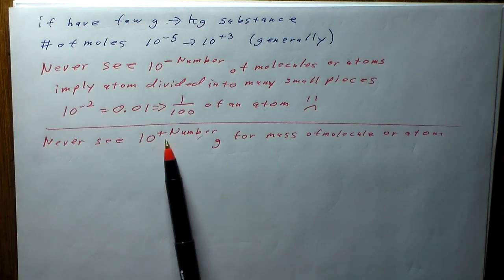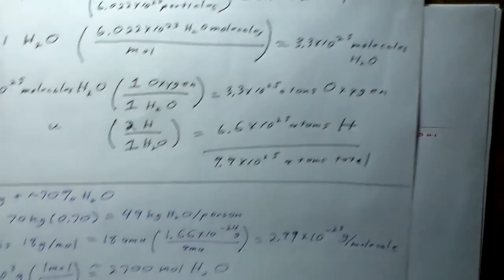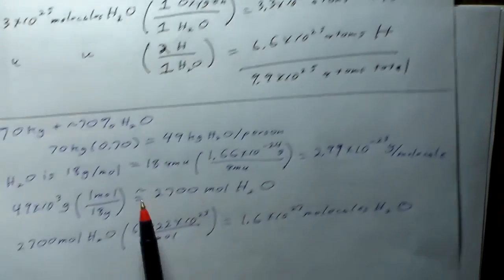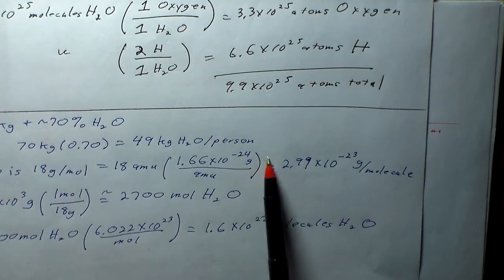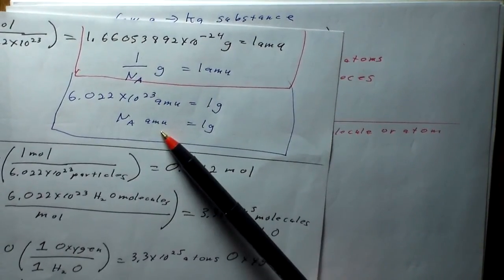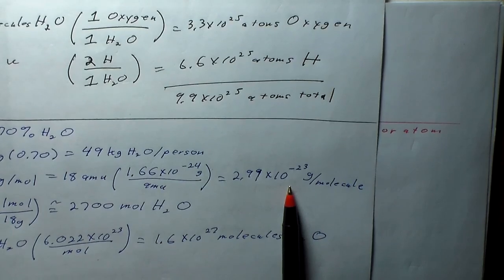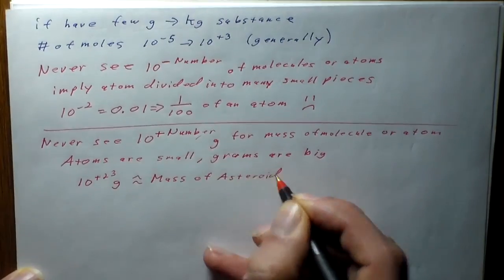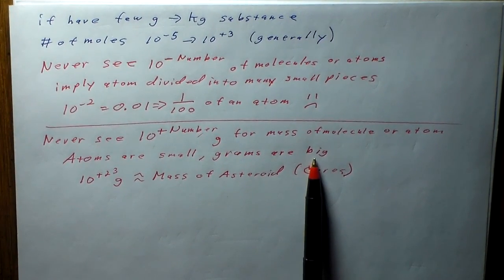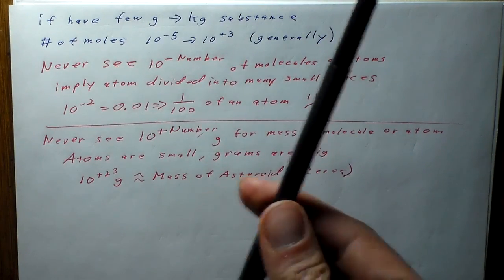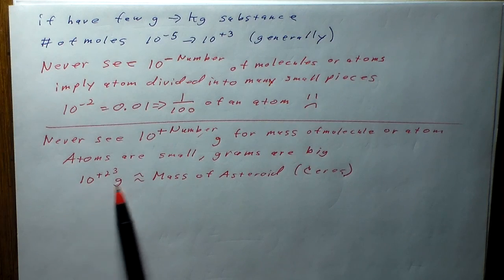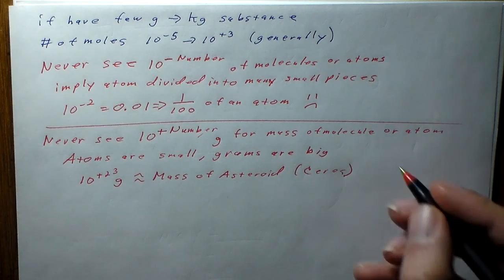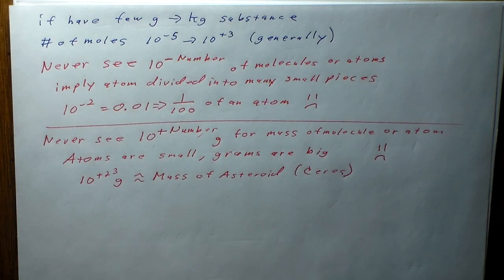Similarly, you'll never see a positive power of 10 for the mass of an individual molecule or atom in grams. Atoms are very small. If you calculate 10²³ grams for the mass of one atom, that's approximately the mass of the asteroid Ceres — clearly wrong. If this happens, you've likely used the wrong conversion factor. Keep an eye on orders of magnitude as a way to error-check your calculations.